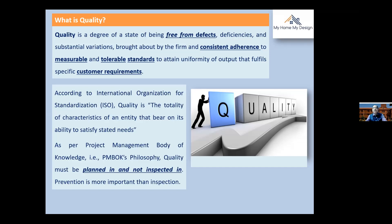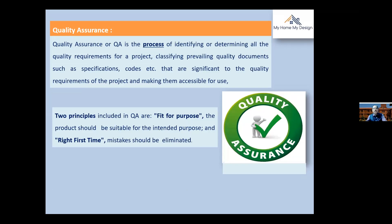Quality assurance is the process of identifying all the quality requirements of a project, classifying prevailing quality documents such as specifications and codes that are significant to the quality requirements, and making them accessible for use. That means quality assurance gives the customer assurance right from the beginning — this is our SOP, these are our records, this is our specification, and as per IS codes, this is what we are going to do.